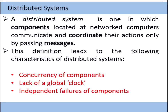A distributed system is one in which components located at networked computers communicate and coordinate by passing messages. The whole system consists of heterogeneous distributed components — nodes or computers — that are shared and linked using a network, and the computational goal is one shared goal.